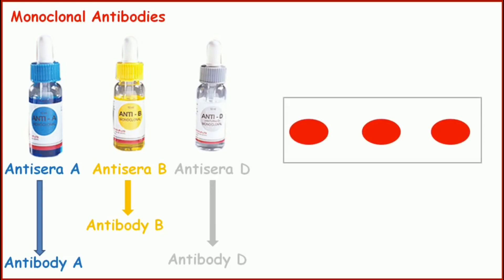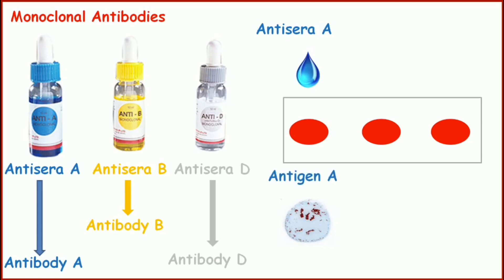Let's take three drops of blood separately on a slide. We will add antigen A in the first drop of blood and mix well. If after mixing we can see agglutination, then antibody A which is in the antigen A reagent has interacted with antigen A on the red cells, showing visible agglutination or clumping. So we can say antigen A is present in the blood. Now for the second drop of blood, we add antigen B and mix well. If we see agglutination, antibody B has interacted with antigen B, confirming antigen B is present.